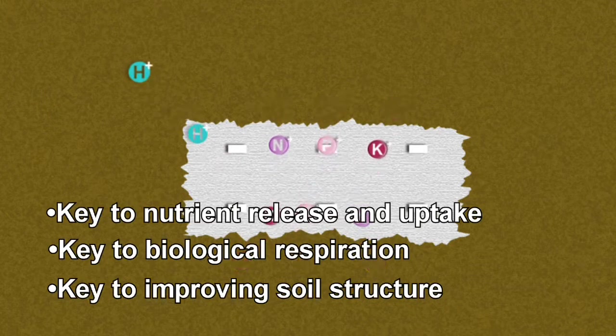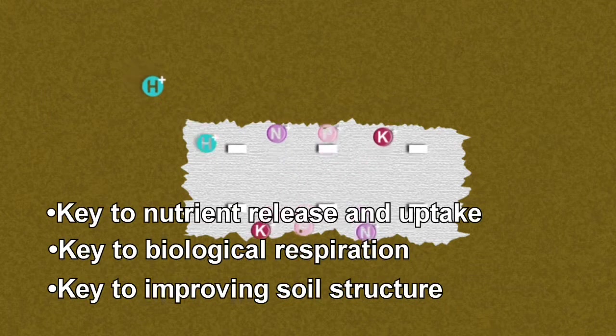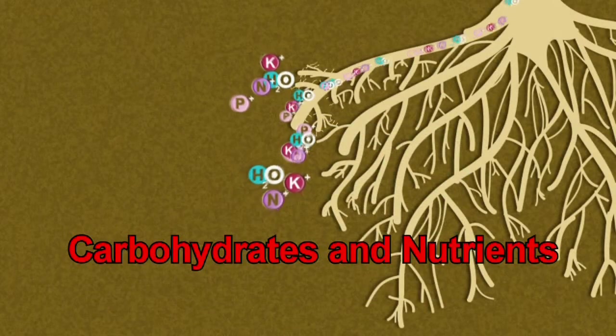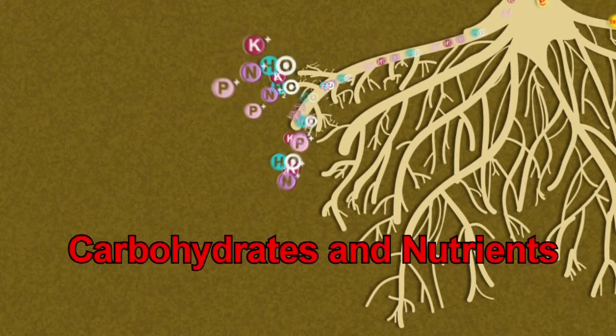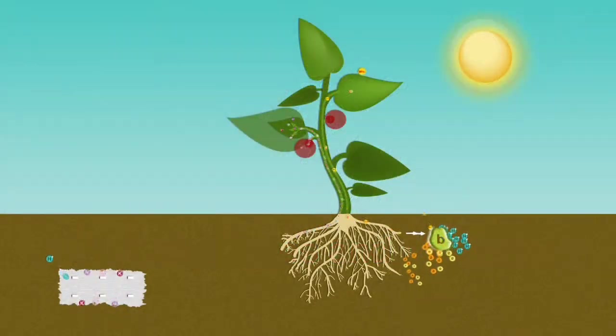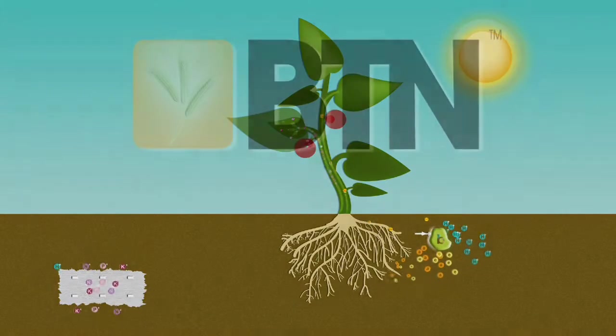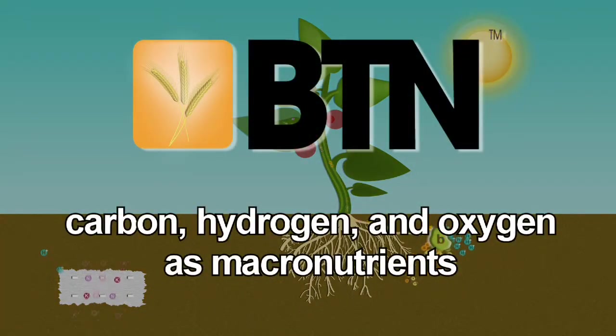In addition to the three main functions of plant growth and reproduction, the flow of carbohydrates and nutrients greatly affects the overall health of the soil as well. Unlike other synthetically derived fertilizers and traditional organic amendments, BTN treats carbon, hydrogen and oxygen as micronutrients, the building block of all plant life.